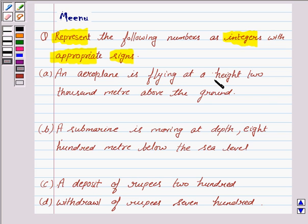an aeroplane is flying at a height 2000 meter above the ground. So, if this is the ground, the plane is flying at a height of 2000 meter.